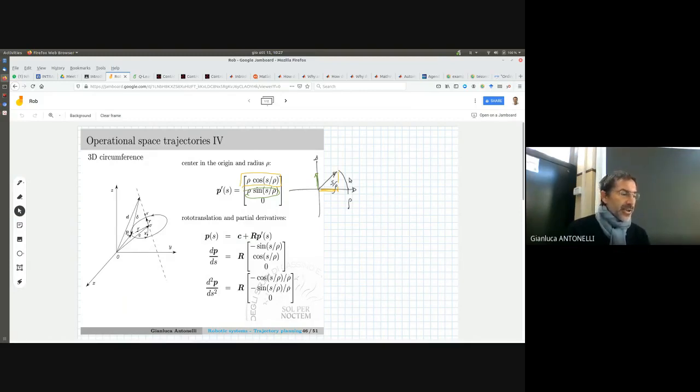Now, what is the tangent? The tangent will basically be this one. And if you compute the partial derivative with respect to s, you get exactly this vector here, then rotated about R. R is constant, given by the application. And then I have, of course, also the partial derivative with respect to s twice.